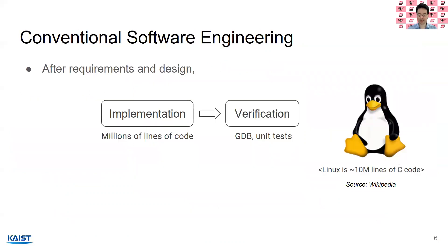This wide usage of deep learning is sometimes referred to as a new paradigm in software engineering, coined Software 2.0, first used by Andrej Karpathy. In conventional software engineering, you have requirements and designs, then you implement — for example, millions of lines of code in C or C++. You then verify and debug using unit tests and keep on maintaining that code.